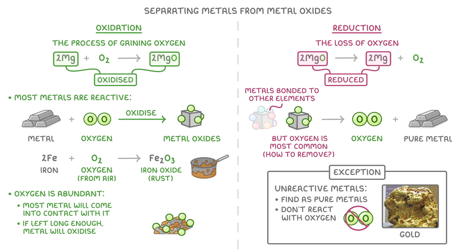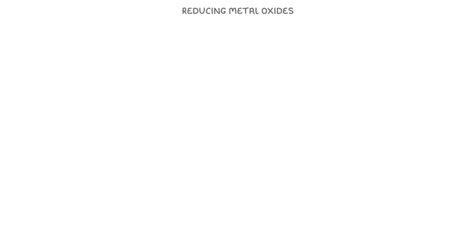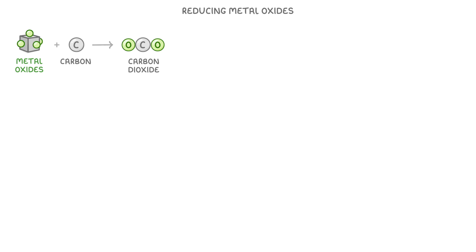We saw at the beginning that reduction means the loss of oxygen. So essentially, we're trying to reduce our metal oxides to get pure metals. The cheapest and easiest way to do this is to react our metal oxides with carbon. The idea is that the carbon will basically take the oxygen from the metal to form carbon dioxide and leave behind a pure metal.